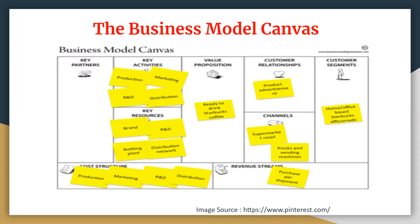Next is value proposition — that is nothing but how you are going to give value-added services to your customers, or what platform you are going to choose for your product or services. For example, food industry franchises always keep offers on weekends only, because they know people are free on weekends. This is a good value proposition — on that particular weekend they make more sales compared to weekdays. So value proposition is what value-added services you are going to give to your customers.